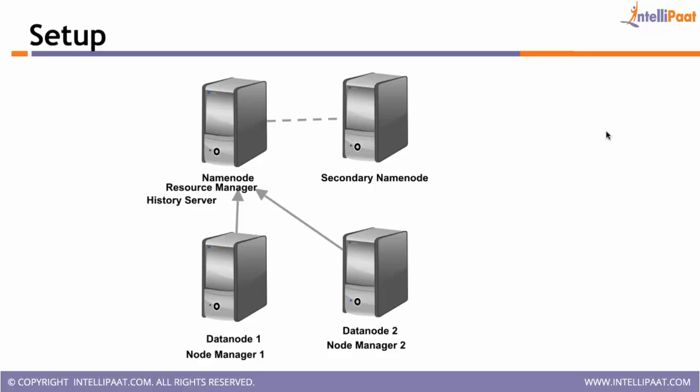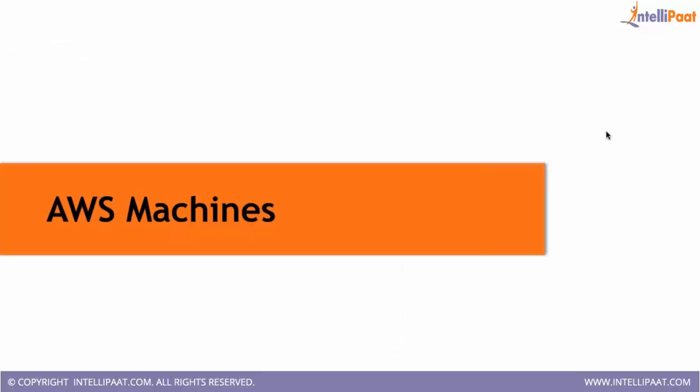The setup will be: on the first machine we will install the name node, resource manager, and history server — three services. On the second machine we will install the secondary name node, which is used for name node HA. On the third machine we will install the data node and node manager services. On the fourth machine we will also install data node and node manager. So the second, third, and fourth machines will be your data nodes. The first machine will be your name node, making it a three-node cluster with a secondary name node for HA.